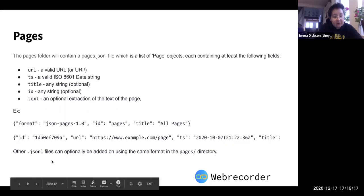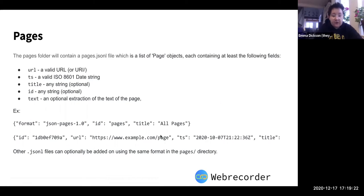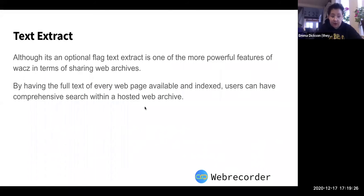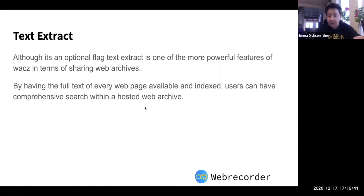There's also an optional text field, which is an extraction of the text of the page. You can pass a flag to WACZ and get text extraction. It's optional but one of the more powerful features for making web archives human-readable and useful. If you have the full text extract, you can easily set up full-text search of every page in the archive, which makes it much easier to find resources in a complex archive.